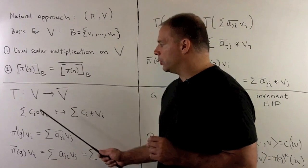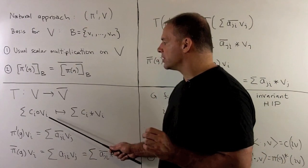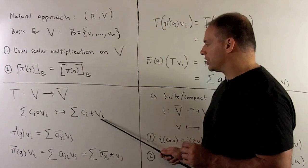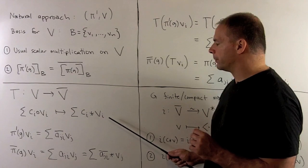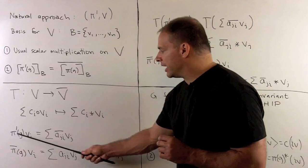The T that I'll use, if we write our vector as a linear combination on our basis, then it'll carry usual scalar multiplication to conjugate scalar multiplication.